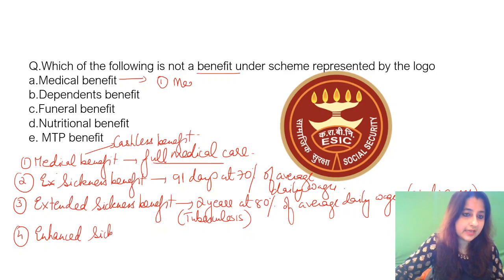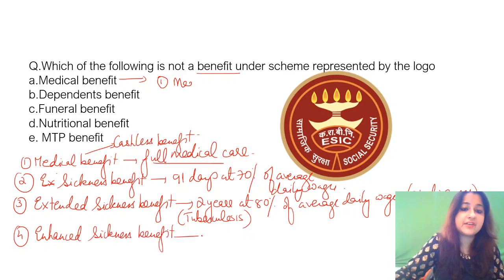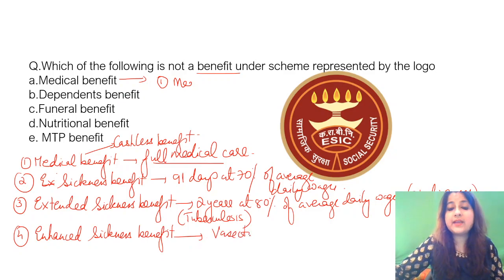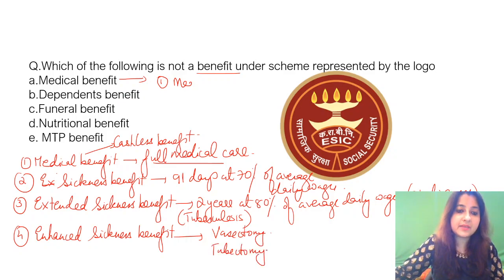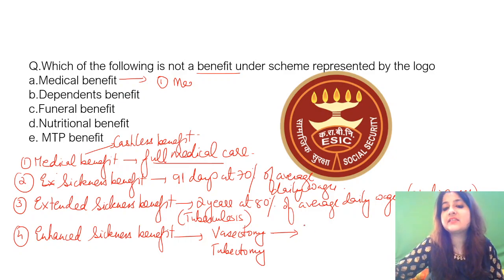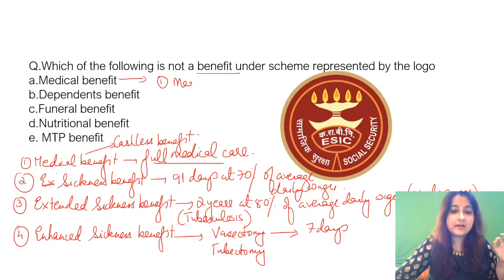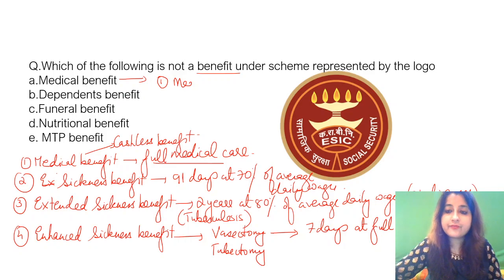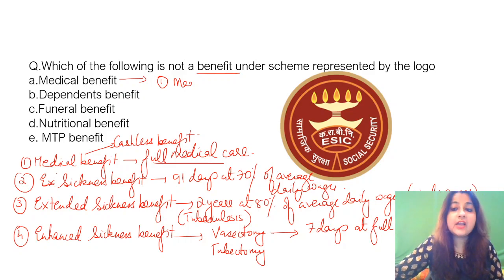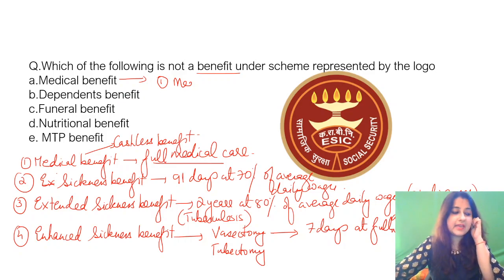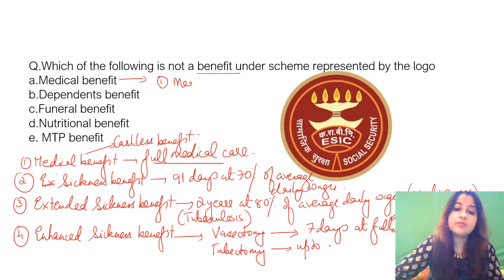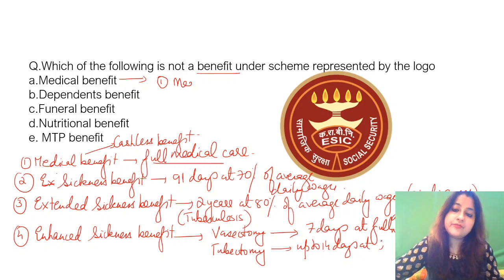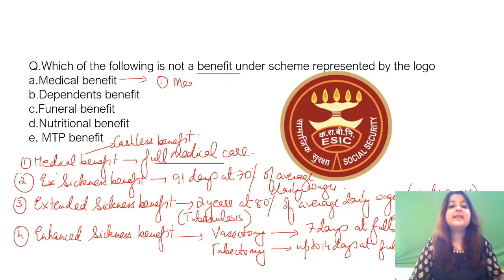Enhanced sickness benefit is given in cases of vasectomy and tubectomy. For vasectomy, male employees get a benefit of 7 days at full average daily wages. For tubectomy, female employees get up to 14 days at full average daily wages. These fall under the sickness benefits category.